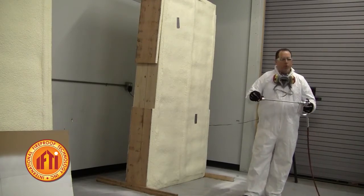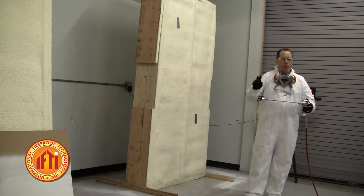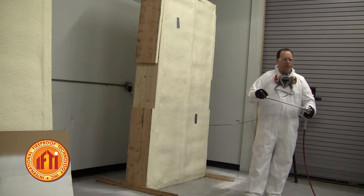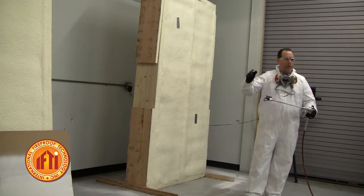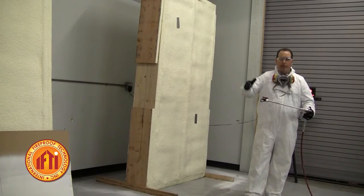The second part is your orifice size. The larger the number, the larger the hole on it. Now, you've got to be careful about going up in your orifice. So right now, we have a 519. We may jump to a 521. We may jump to a 525.